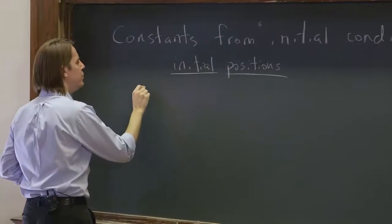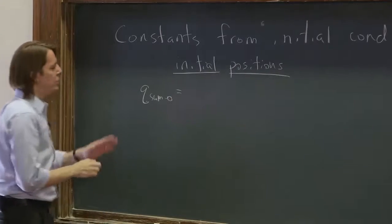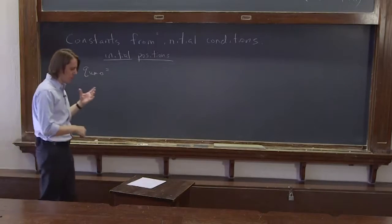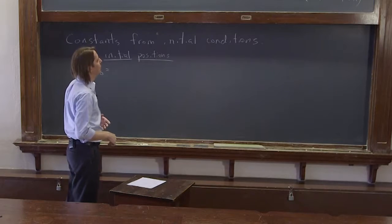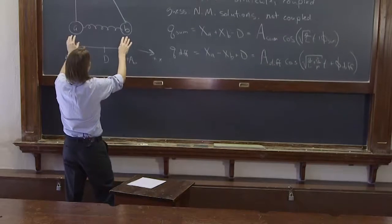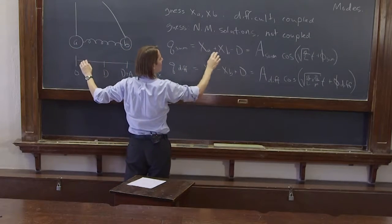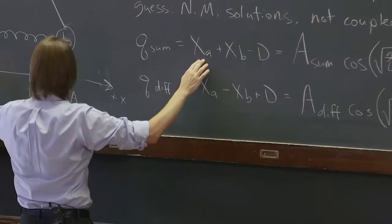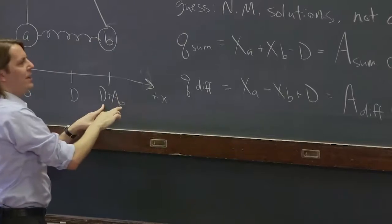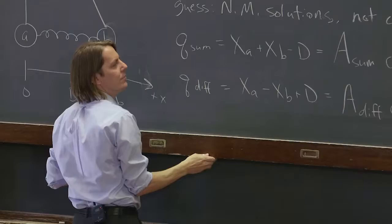So we have q_sum_0, the q_sum coordinate at its initial value. If we think about it, we had this as our initial position. q_sum is x_A plus x_B minus d. Well, x_A is 0, so that's 0. x_B is d plus A_0, and then minus d, so d plus A_0 minus d is A_0.